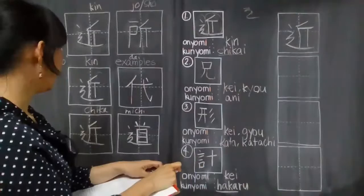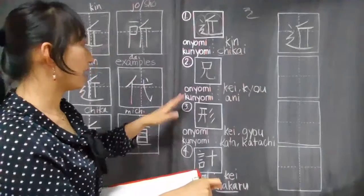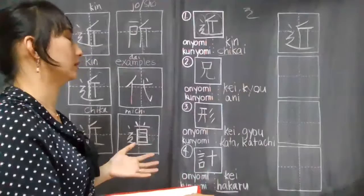And next, so this one, this, and this. All of these three, they have the same onyomi, which is kei. So I'm going to give you the differences between the three and how do you use them.